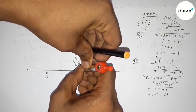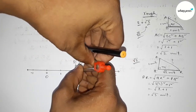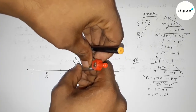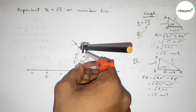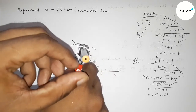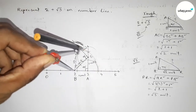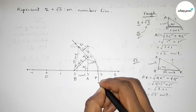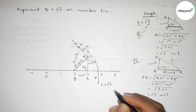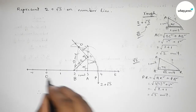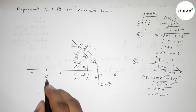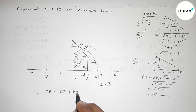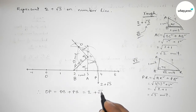Now drawing a curve through point D which meets the number line at a point — meeting at point P. So this is 2 plus root 3 on the number line. Therefore, OP equals OB plus BP, where OB equals 2 units and BP equals root 3 units. That's all, thanks for watching!